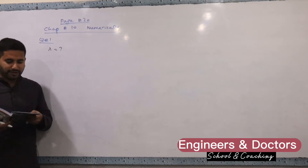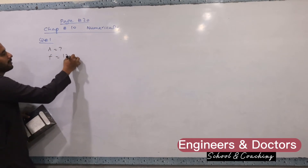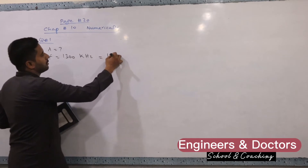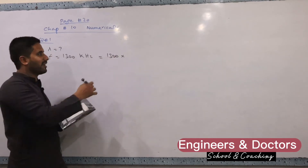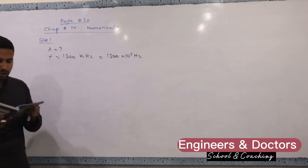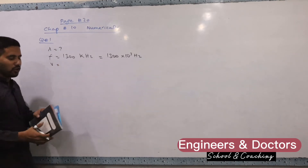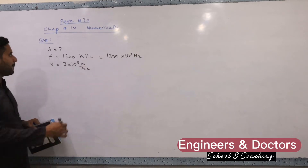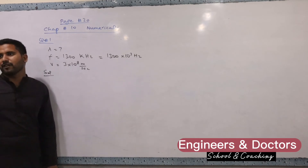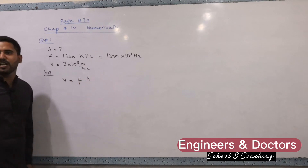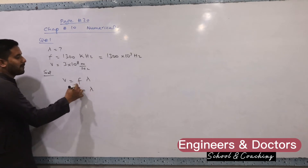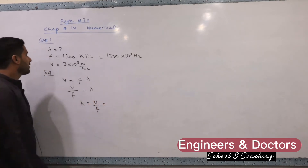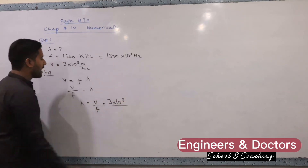A radio station broadcasts with a frequency of 1300 kHz. The speed of radio waves is given as 3×10⁸ m/s. We use the formula: wave speed v = f·λ. To find the wavelength, λ = v / f. So λ = 3×10⁸ divided by 1300×10³.